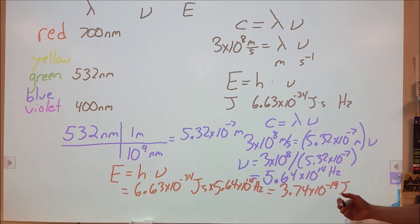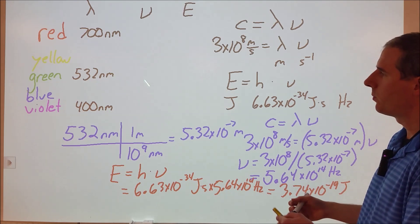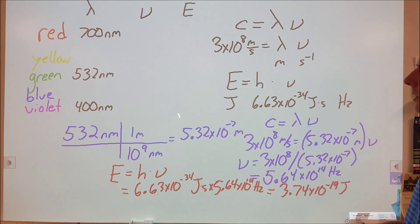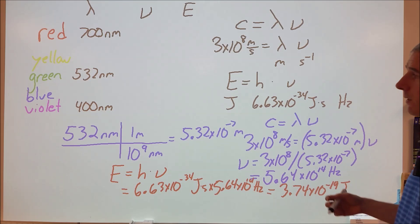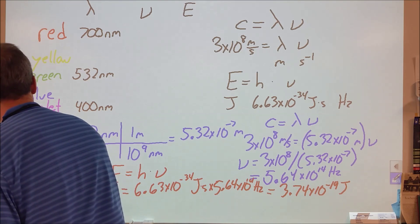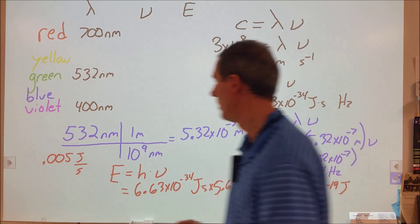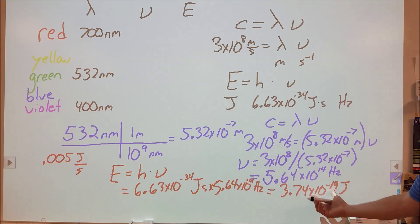10 to the negative 19th joules is a very, very small amount. However, this particular laser here gives off 5 milliwatts or a little less than 5 milliwatts. That's giving off 0.005 joules per second.